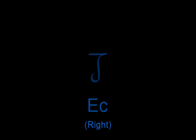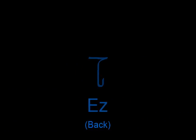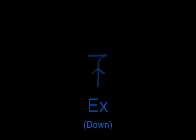Next is the letter Ec, which means right and is used in words to describe east, starboard, and being analytical. After that is the letter Ez, which means back and is used in words to describe retreat, the rear of something, south, and being behind. The last letter for the middle sounds is Ex, which has a meaning of down and is used in words to describe the bottom of something, being lower, being underneath, and a downward direction.